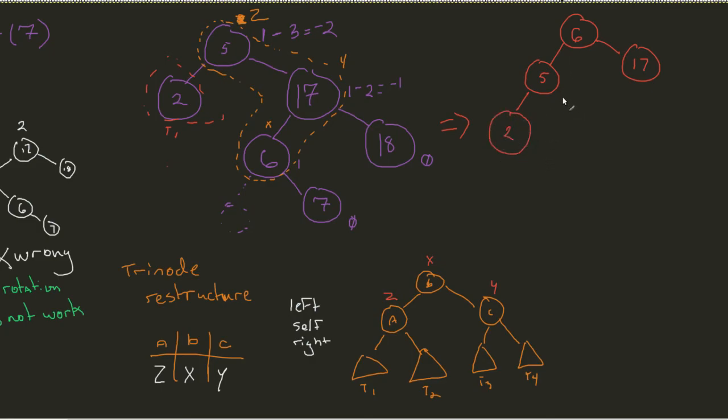Now, what does 5 get? Well, 5 is going to get either the T2 of X, or the T3 of X, or the T4 of Y. In our case, since we're on the left side, it's going to get T2. So, in that case, it gets nothing.